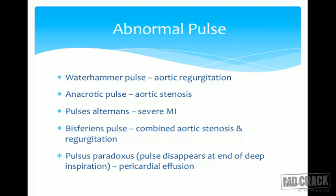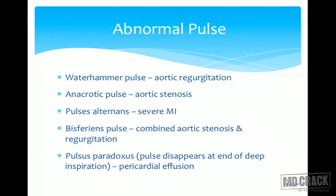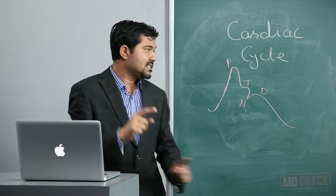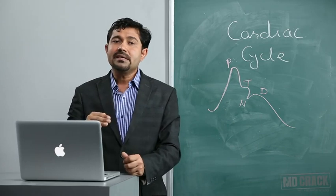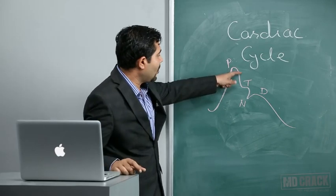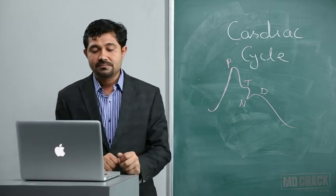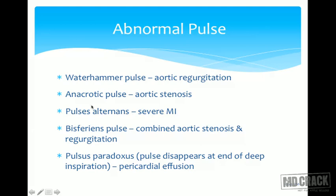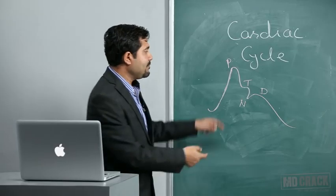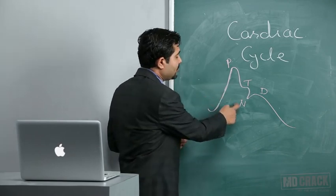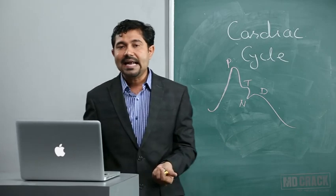The water hammer pulse shows a rapid rise and rapid fall, seen in aortic regurgitation. In aortic regurgitation, regurgitating blood increases end-diastolic volume, increasing stroke volume and causing a rapid ascent, while decreased peripheral resistance causes a sudden pressure fall. In aortic stenosis, less blood is ejected, producing a small amplitude pulse called anacrotic pulse.